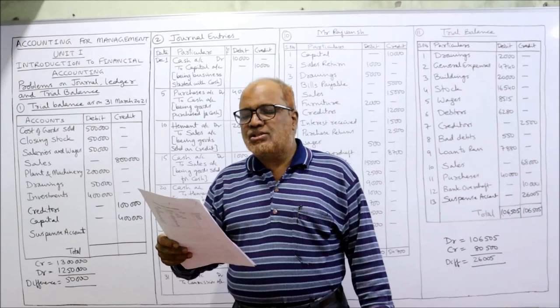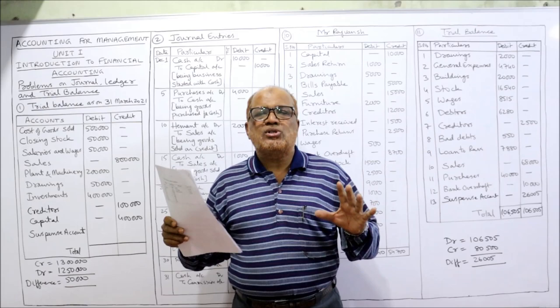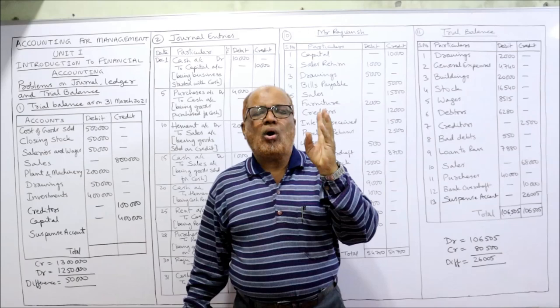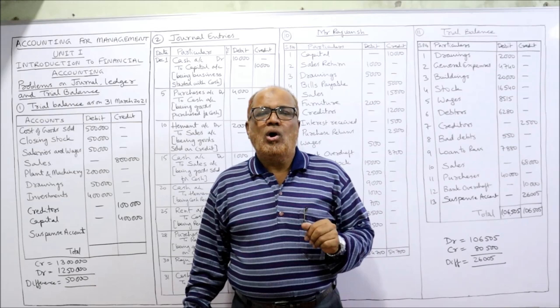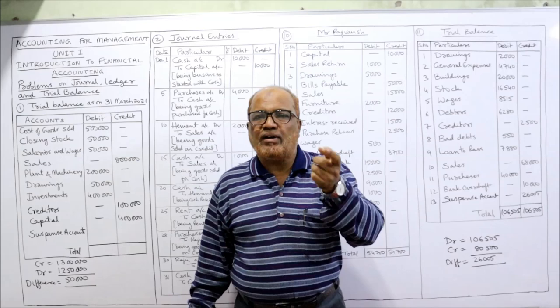Now, first problem: prepare trial balance for the following balances as on 31st March 2021. In preparing the trial balance, you must know which item will show debit balance and which item will show credit balance. Remember the rule: all assets, expenses, and losses will show debit balance; all incomes, gains, and liabilities will show credit balance.